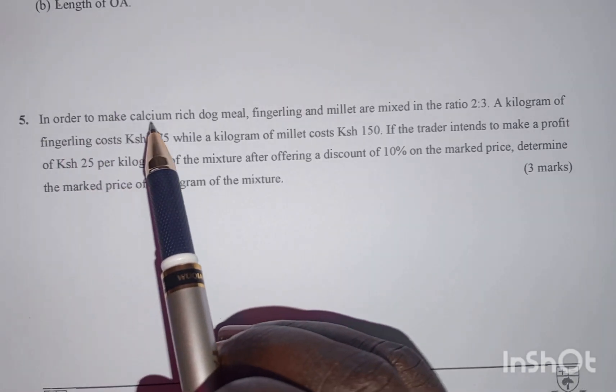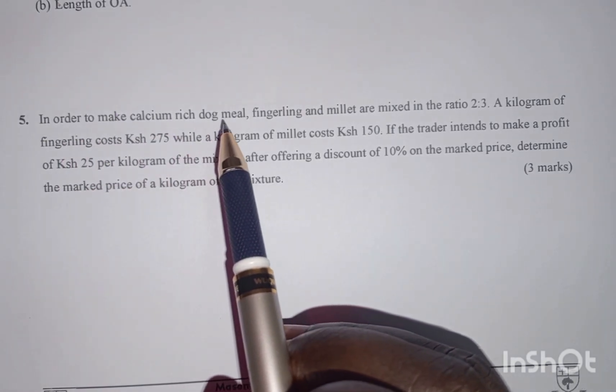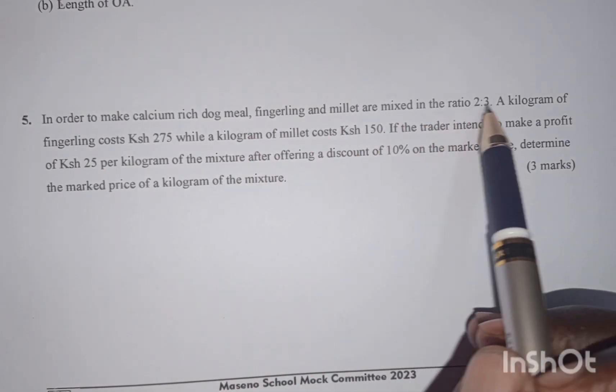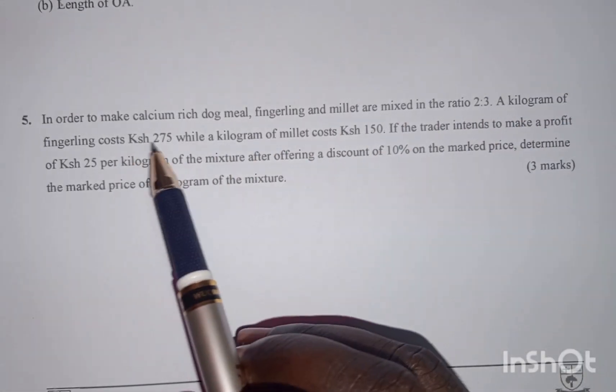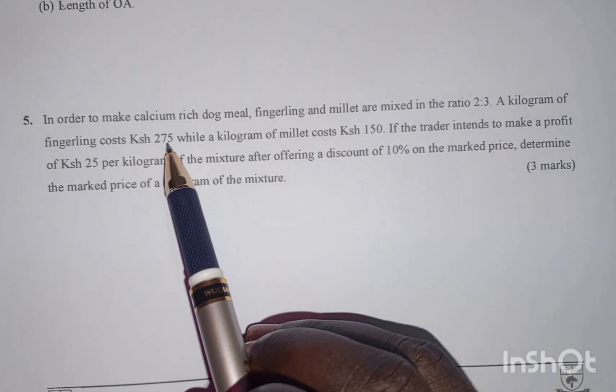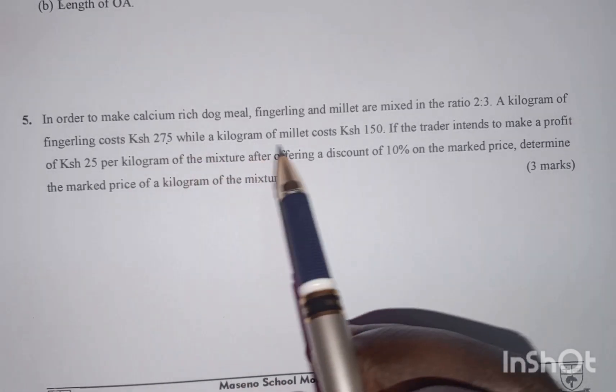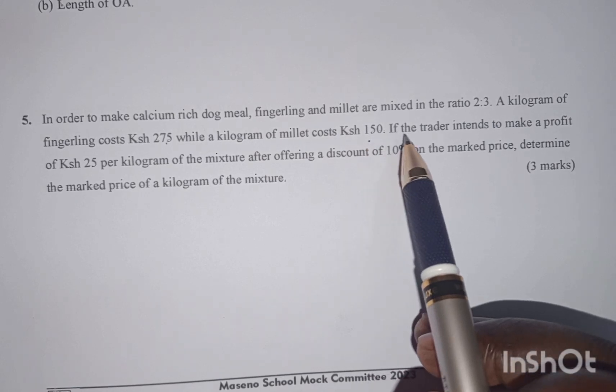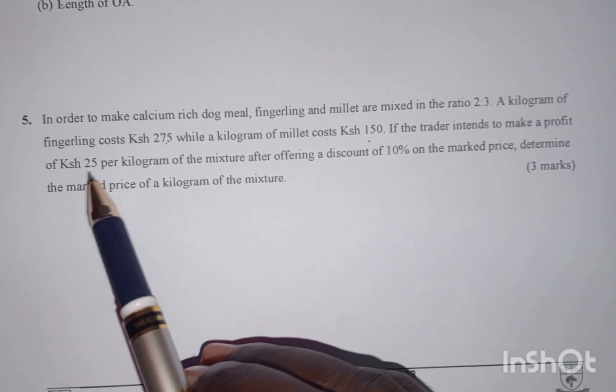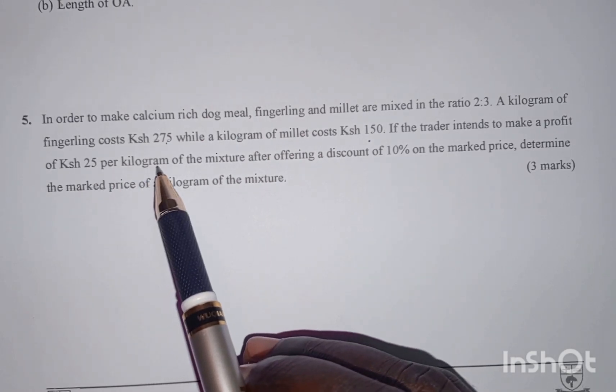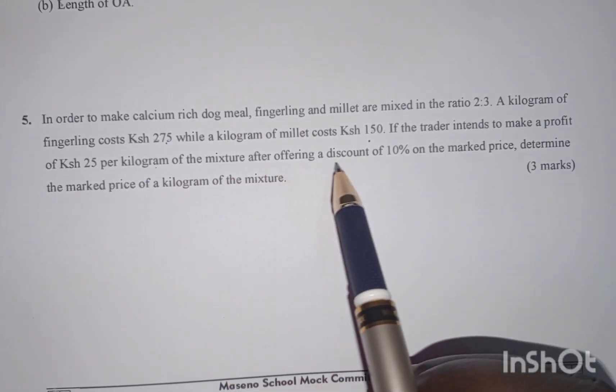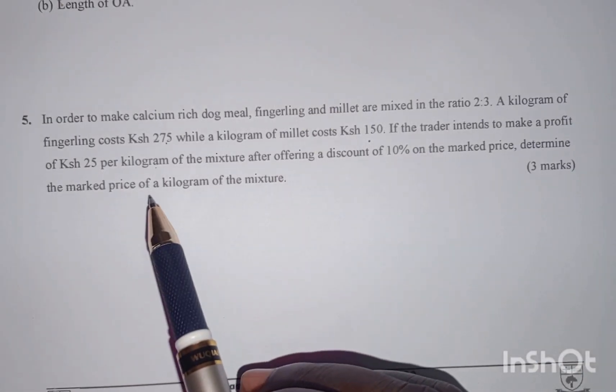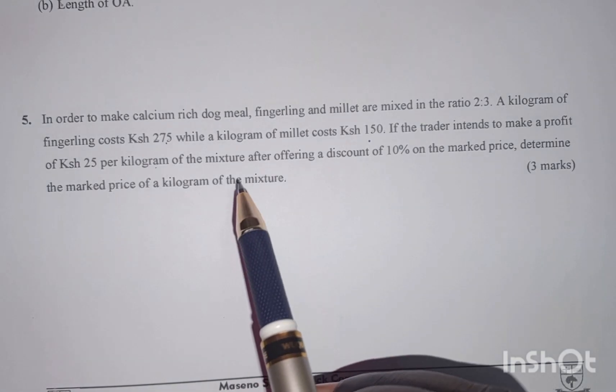In order to make calcium rich dog meal, fingerling and millet are mixed in the ratio of 2 to 3. A kilogram of fingerling costs 275 shillings while a kilogram of millet costs 150 shillings. If the trader intends to make a profit of 25 shillings per kilogram of the mixture after offering a discount of 10% on the market price, determine the market price of a kilogram of the mixture.